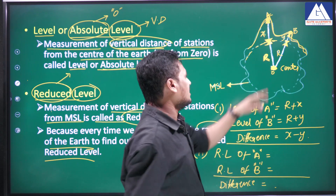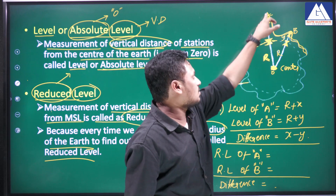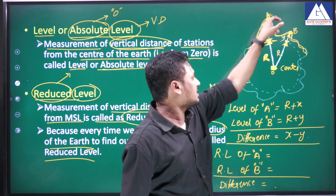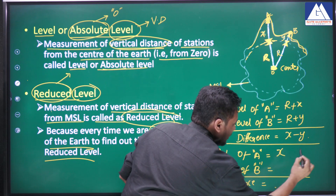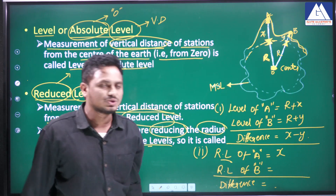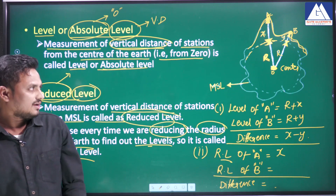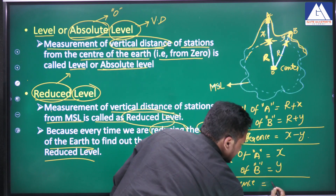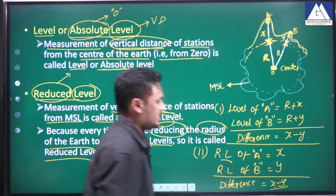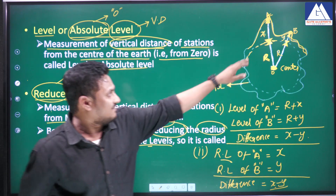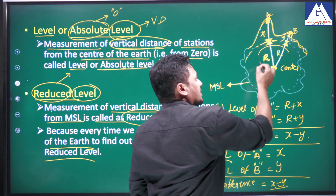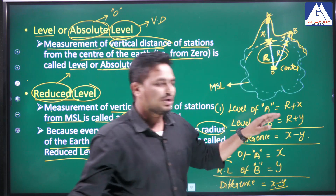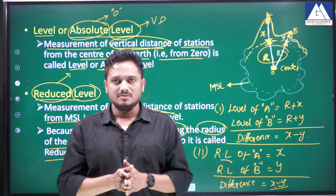This dotted line is called the mean sea level, and that is the reference for reduced level. From here to here is x meters, so the reduced level of A equals x meters, and the reduced level of B equals y meters. The difference will be x minus y meters, because every time we are reducing the radius of the earth portion to find the levels. So it is called reduced level.